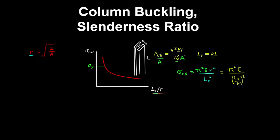This column is more slender, so the slenderness ratio is higher, and therefore the critical buckling stress for this column is lower. So it's more easy to make it buckle.